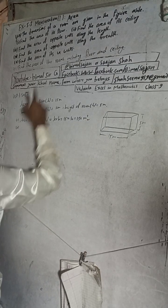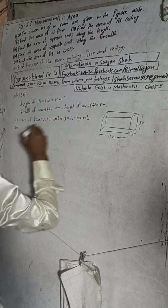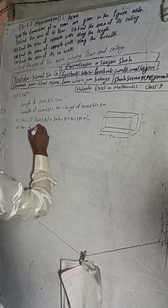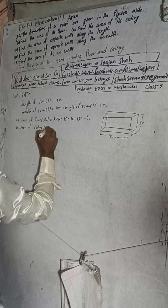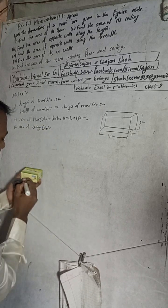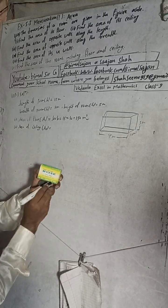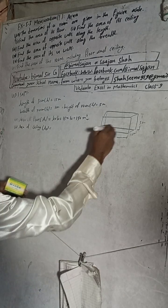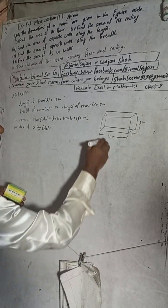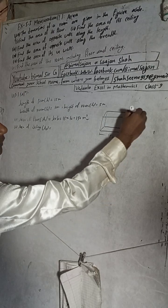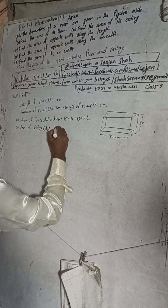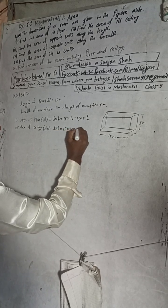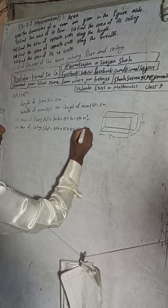Number two: find the area of the ceiling. Area of ceiling A2 is also the same as area of floor, because all four walls are perpendicular. So the floor and ceiling have the same dimensions: L into B = 15 × 10 = 150 meter square.